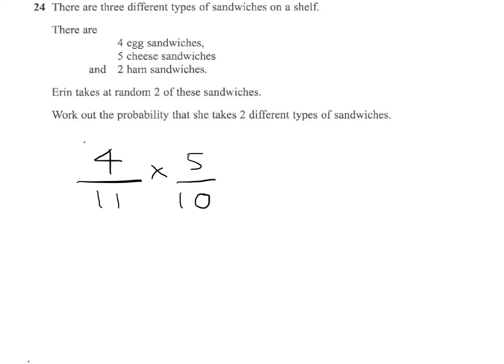Now, she could do this the other way around. So she could take cheese and egg. If it was cheese and egg, it would be five from eleven times four from ten. So you can see it's exactly the same answer. This part and this part would be the same, so we may as well just double one of the answers.